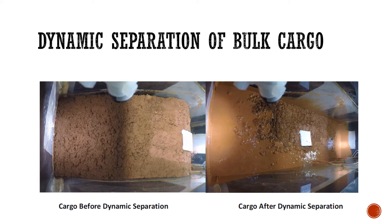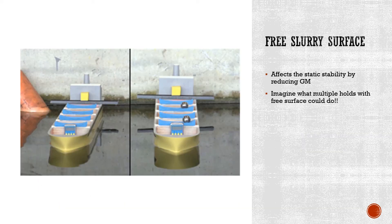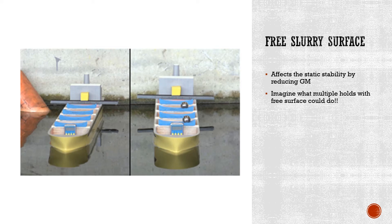In most accounts, the survivors say that the first sign there was an issue was when the crew noticed the vessel's unusual response, typically its rolling behavior. Soon after this, the vessel would develop a list that would progressively increase over a period of at least an hour, sometimes even days. Finally, at some point when a list of 15 degrees or more is reached, the vessel capsizes in a matter of minutes.